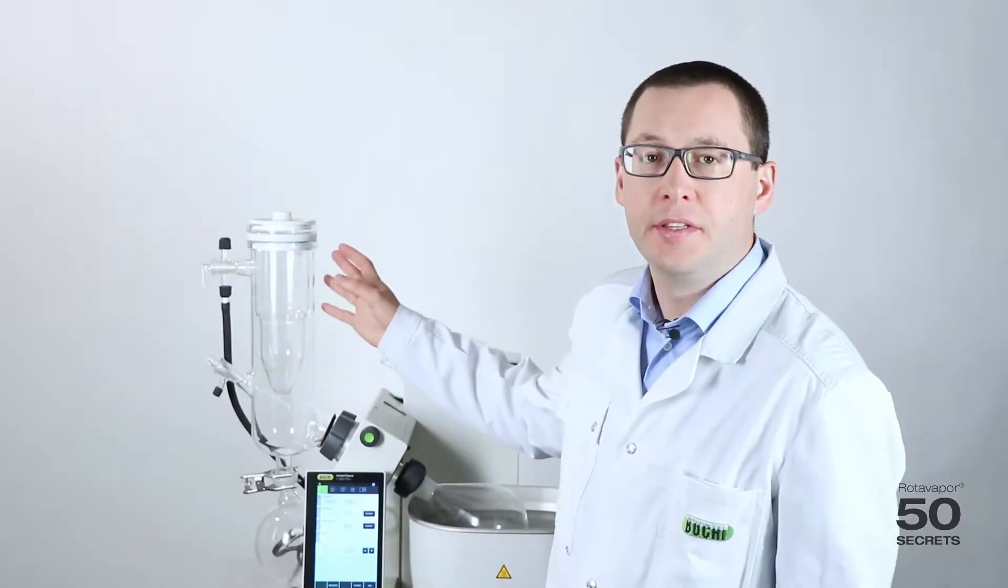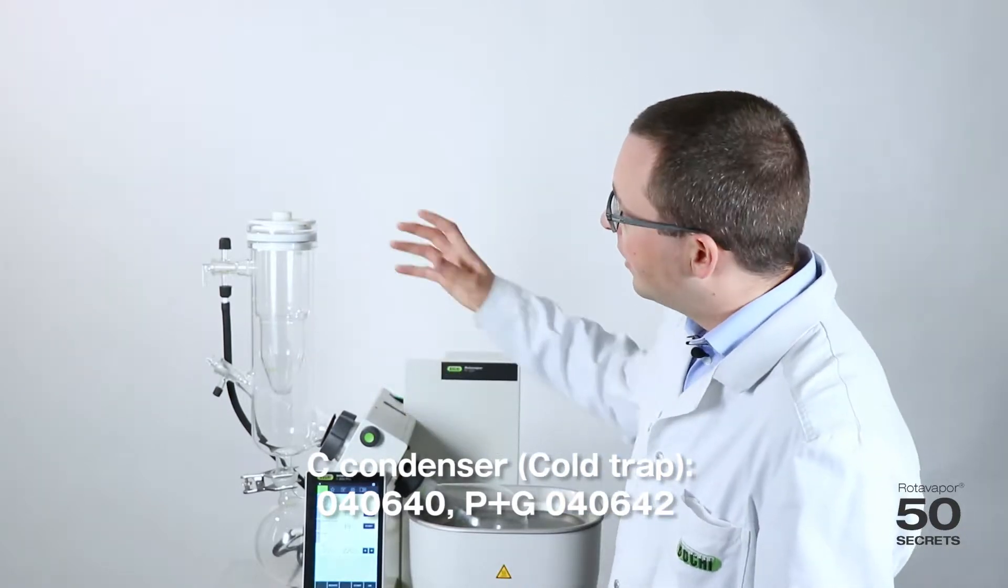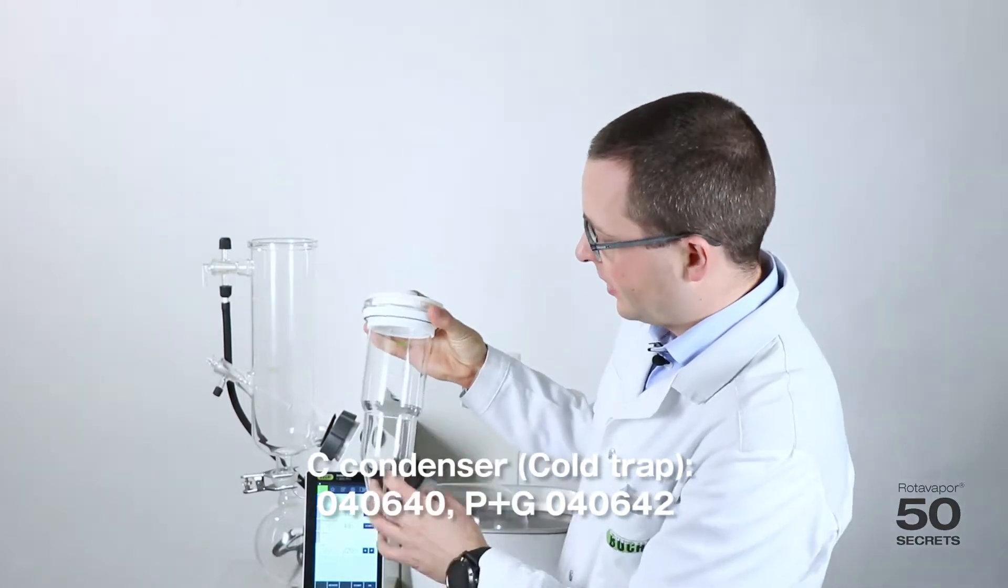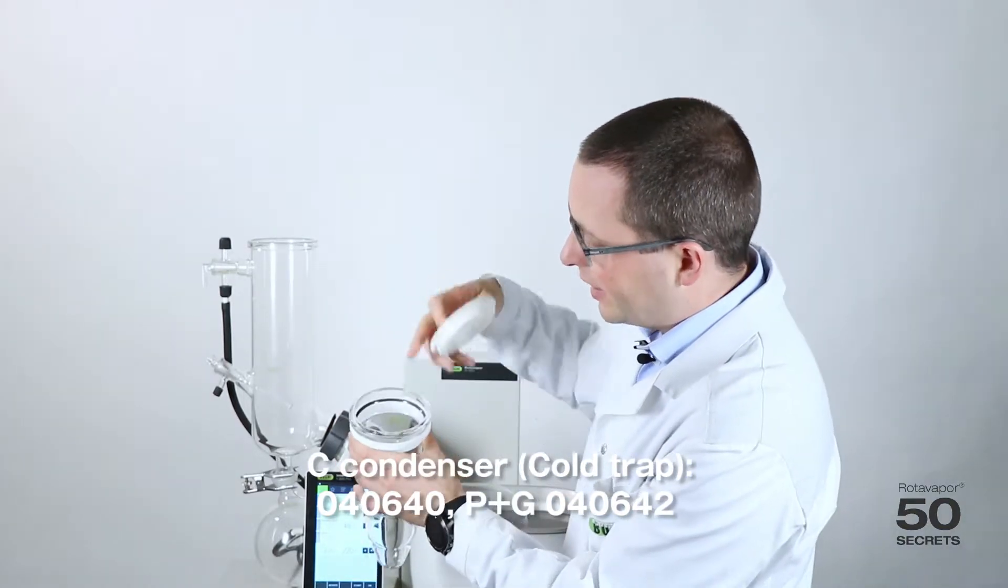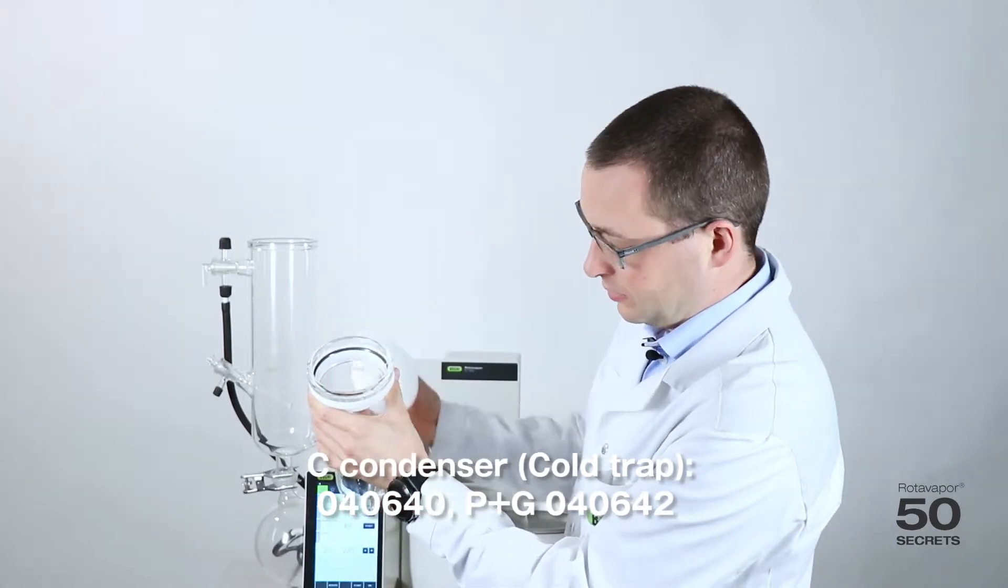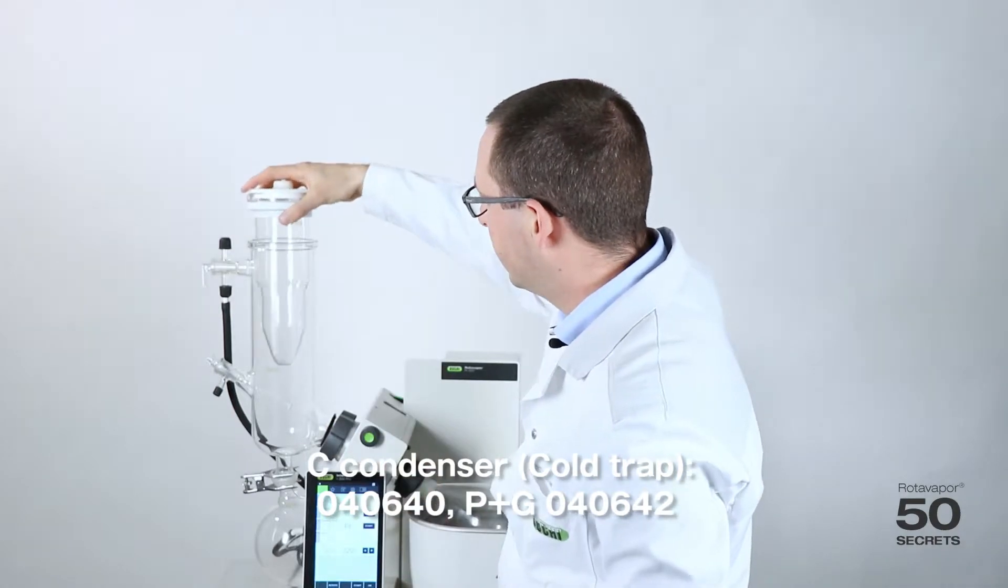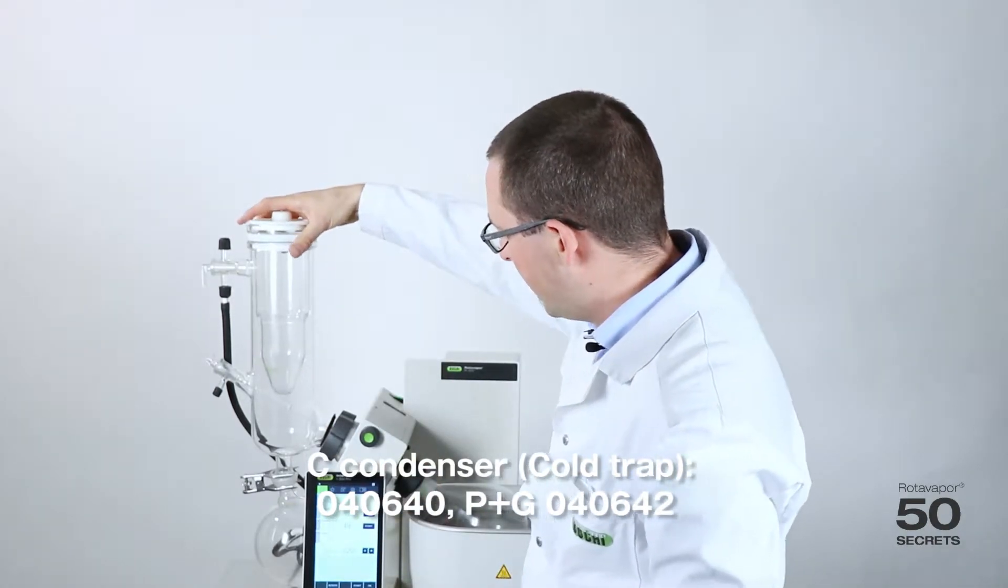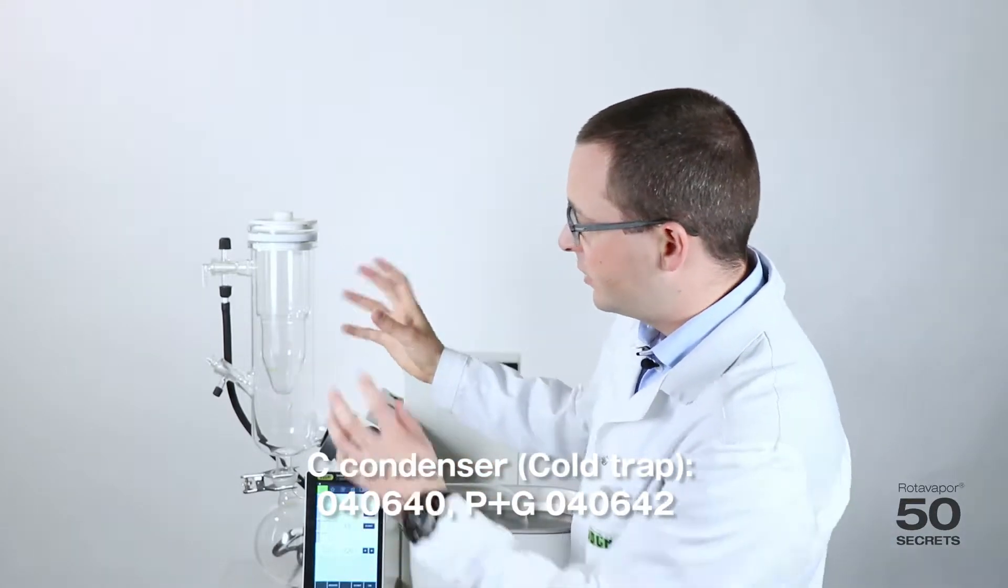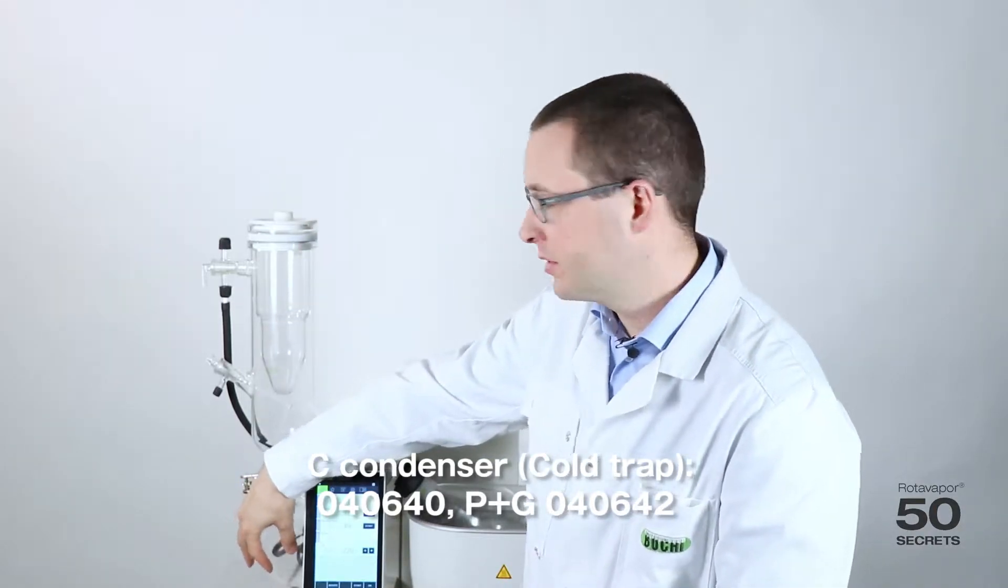This is the C condenser. Let me talk about it for a moment. First of all it's quite different to the V condenser. We can see this cold finger. So we will put dry ice for example with ethanol as a cooling media into the finger here. We'll then place that into the trap and the vapor flows from here to here and attaches to the cold finger and from there it drips into the receiving flask.